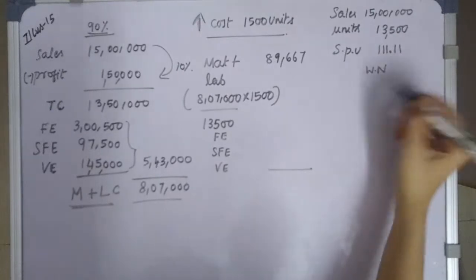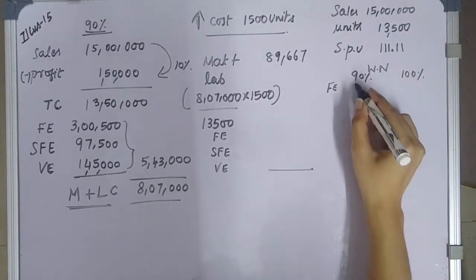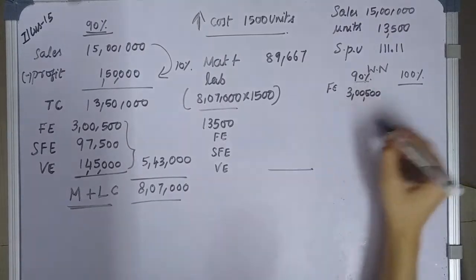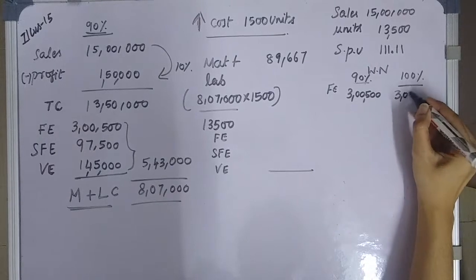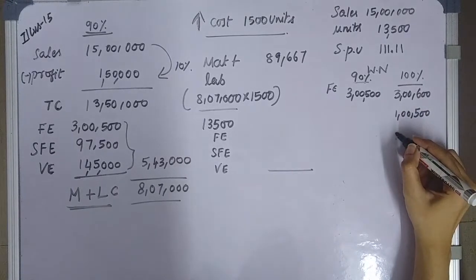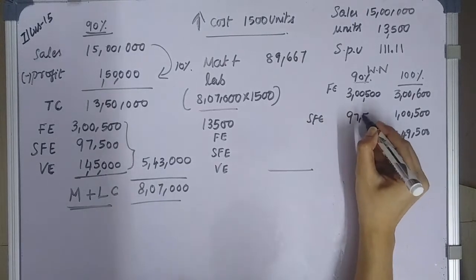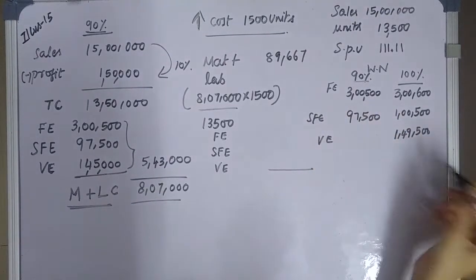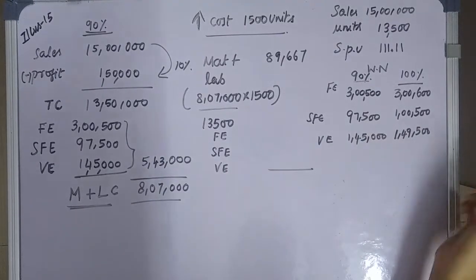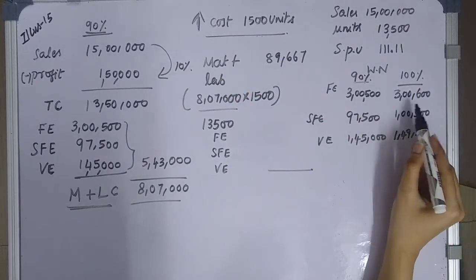Working note: Comparing 90% and 100% capacity figures. Fixed expenses: 3,00,500 at 90% and 3,00,600 at 100% — increment is 100. Semi-fixed expenses: 97,500 at 90% and 1,00,500 at 100% — increment is 3,000. Variable expenses: 1,45,000 at 90% and 1,49,500 at 100% — increment is 4,500. This is the difference amount between 90% and 100% capacity for the incremental 1,500 units.